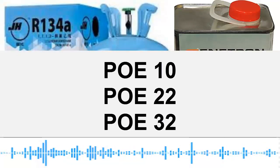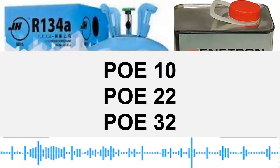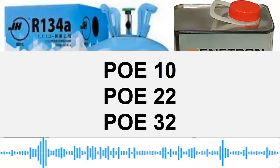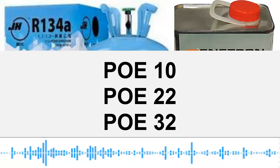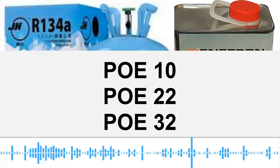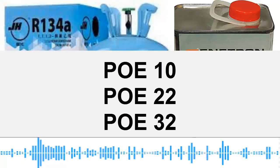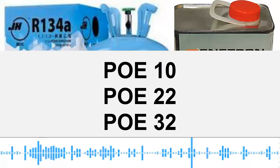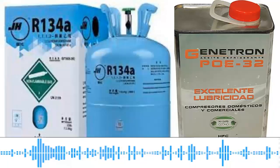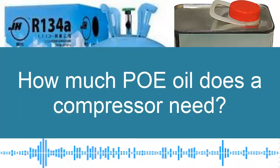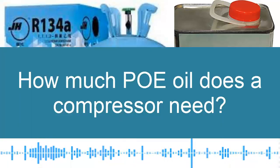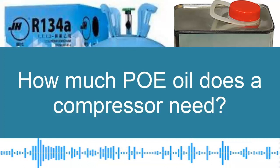The piston compressor of low and medium capacity generally uses POE 10 oil. POE 22 and POE 32 are also commonly used viscosities, with 22 and 32 being the most common.